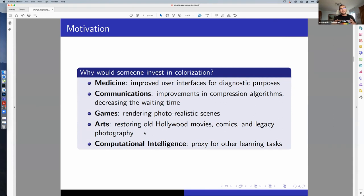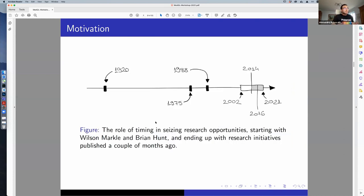In computational intelligence, we can help the topic by being a proxy task. A proxy task is when while I'm learning something, I'm helping another task to learn better. In arts, there are lots of people that would pay for colorization because there are a lot of old movies that could be restored, comics, and legacy photography.